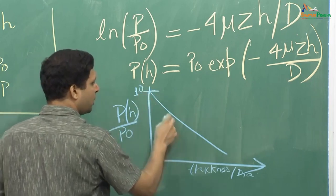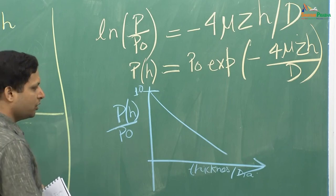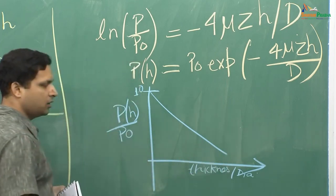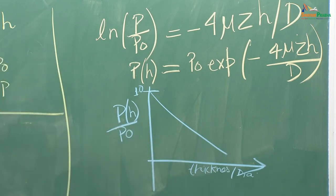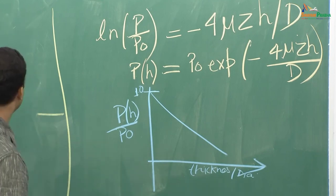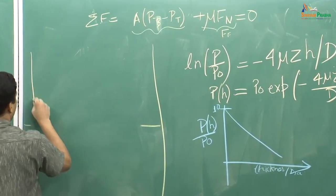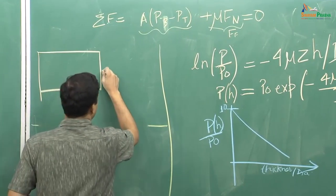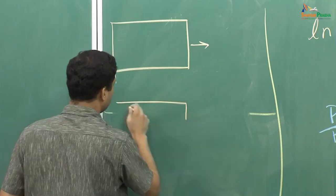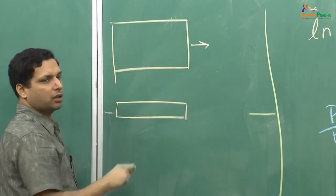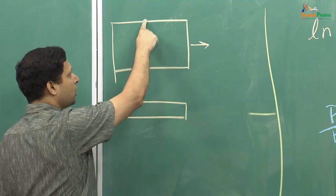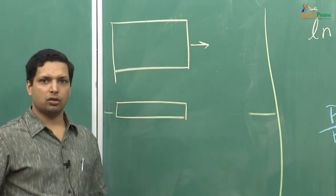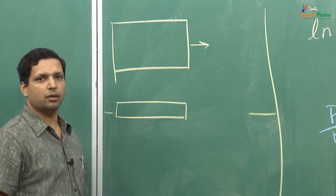As you keep going on, the pressure exponentially decreases — your pressure is continuously decreasing. Not only that, it also says that if you have a much thicker sample, a much thicker material, then the pressure difference will be large. For example, if we have two different compacts — one which is thick (large upper case H) and another which is much thinner (small upper case H) — the pressure drop from top to bottom is very large for the thick one.